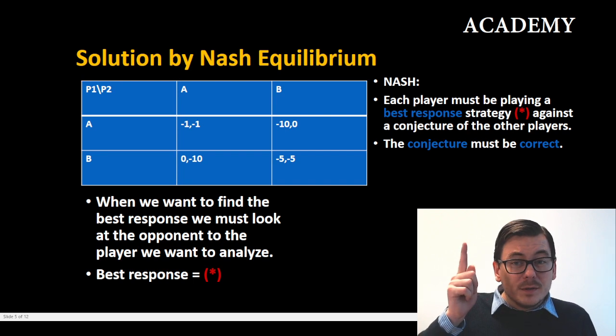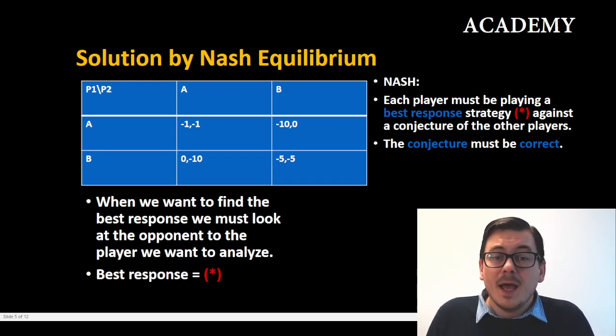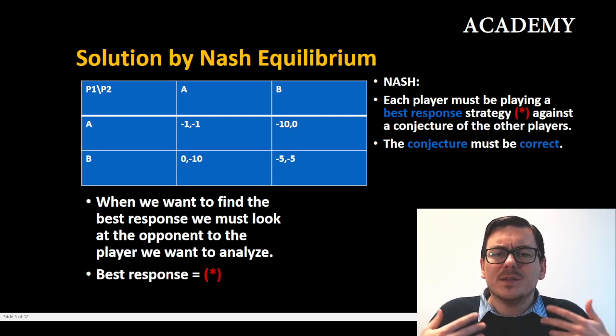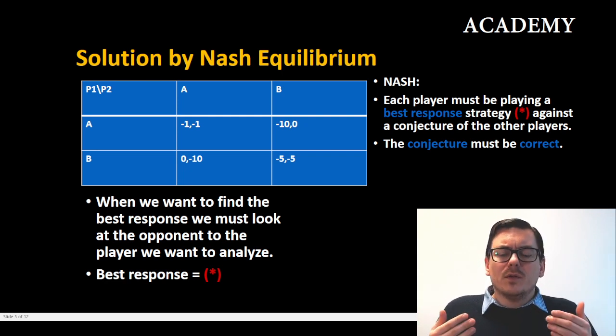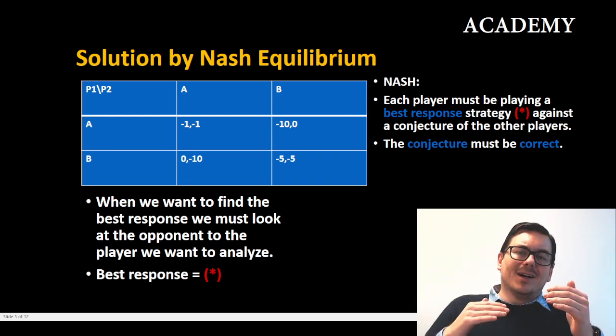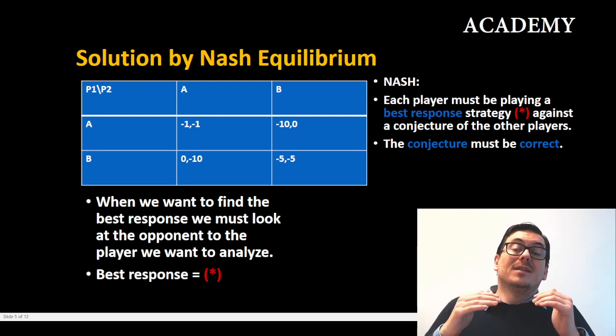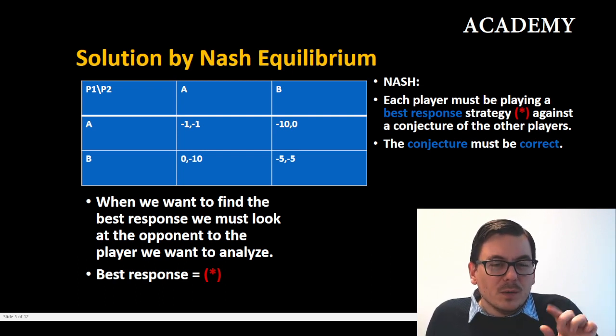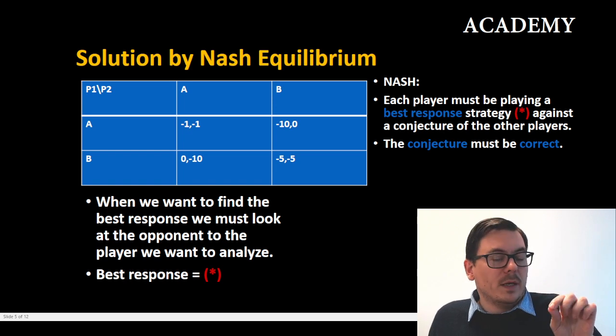I put the two rules of Nash equilibrium up here and we have to remember that we're talking about best response. We must look at the other party's actions to analyze the first party's best response. Let's take a look at it. The best response from now on will be marked by a star, a red star, so we can follow the process.